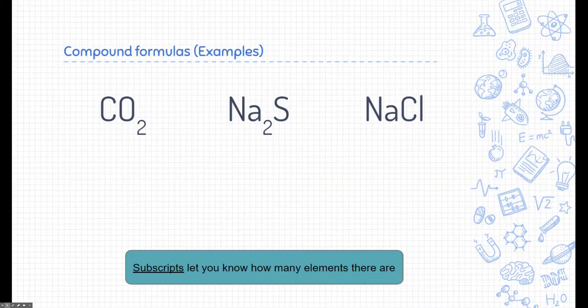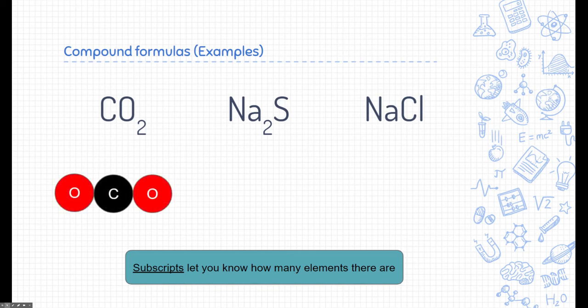Let's look at the compound formulas again, just to make sure we understand what we're looking at here. On the left, we have CO with a little two. That's carbon dioxide. What that means is there's one carbon, and there are two oxygens. The subscript next to elements let us know how many elements there are, and all of these compounds are combined together chemically to make a substance.